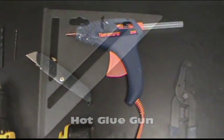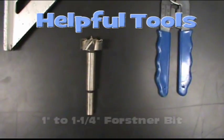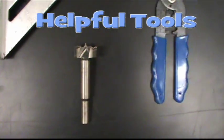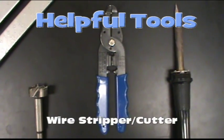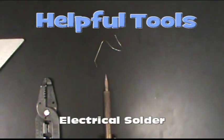You'll need a utility knife and a hot glue gun. Some tools that will be helpful but not necessary would be a square, a forstner bit that's about an inch and an eighth is what we use, a wire stripper, a soldering iron and just a little bit of solder.